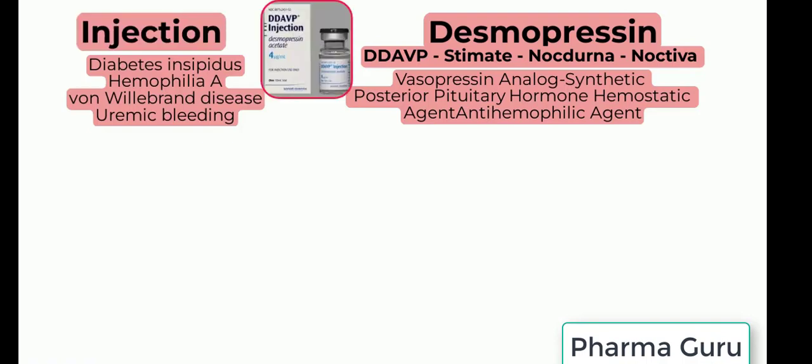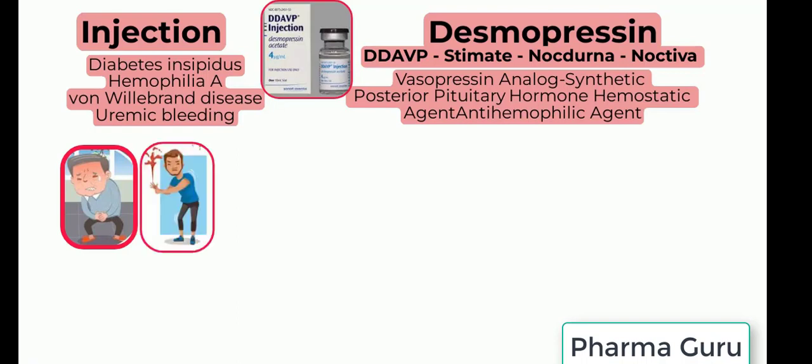The injection form can be used for the treatment of central diabetes insipidus, for the management of temporary polyuria and polydipsia following head trauma or surgery in the pituitary region. It is not indicated for the treatment of nephrogenic diabetes insipidus, and for the treatment of mild hemophilia A with factor VIII coagulant activity levels more than 5% of normal to maintain hemostasis during surgical procedures.